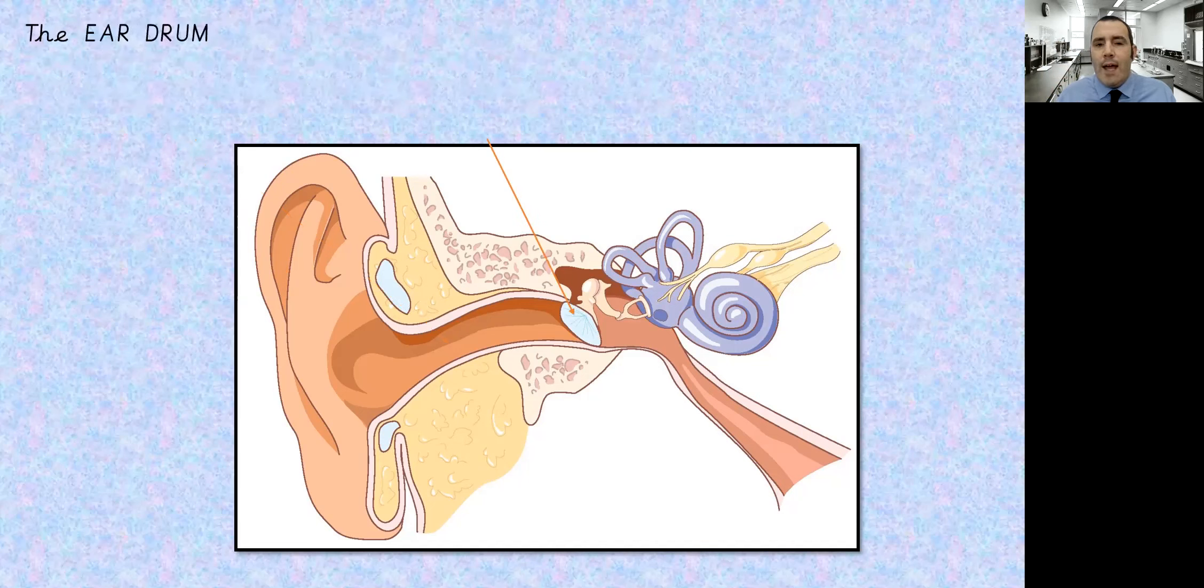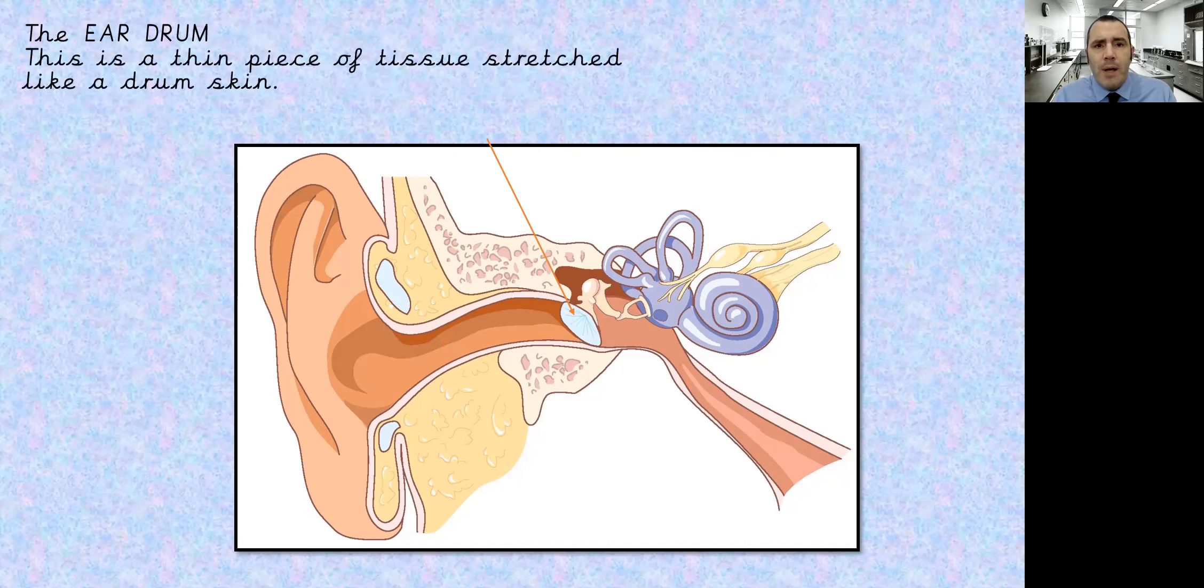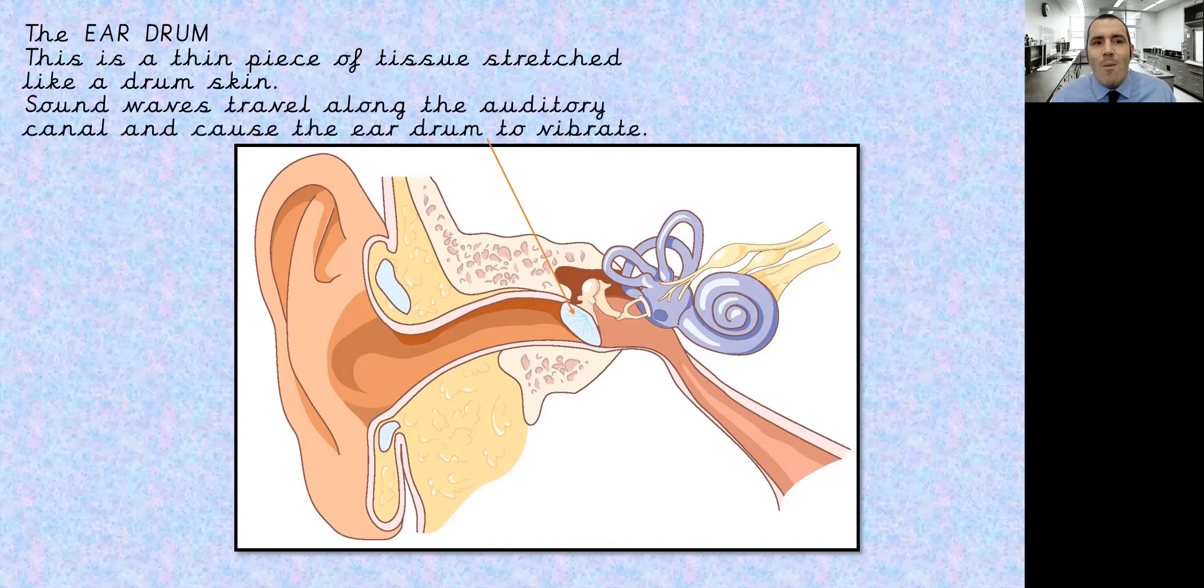We have the eardrum. So this is a thin piece of tissue stretched like a drum skin. Now our sound wave came from the drum, so we have a vibration there. What happens next? So the sound waves have been collected by the pinna. Now they've traveled down the auditory canal and now the eardrum is beginning to vibrate. It's picking up the sound. The waves are making our eardrums vibrate.